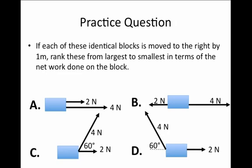So, here's a practice question. In each of these identical blocks there are multiple forces being exerted on the blocks. There are a two newton force and a four newton force and I would like you to rank these four situations by the case in which we go from the largest amount of overall work done on the block or net work done on the block to the smallest overall work done on the block. And let's assume that in each of the four cases the block is being moved by exactly one meter to the right.